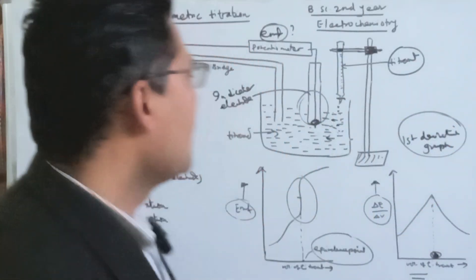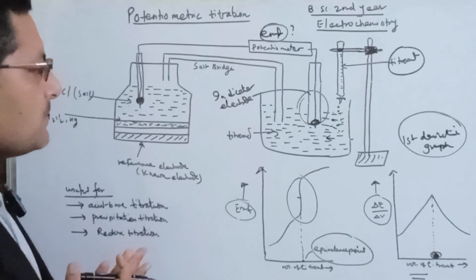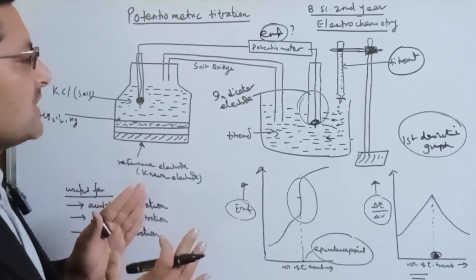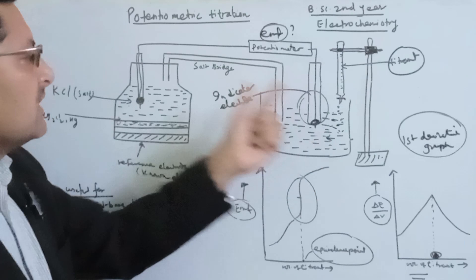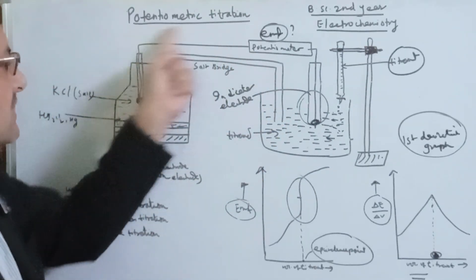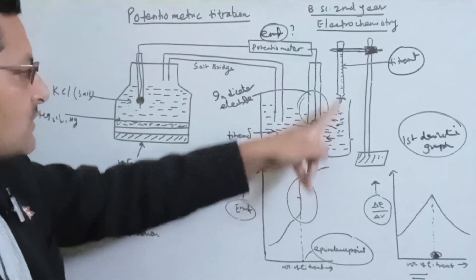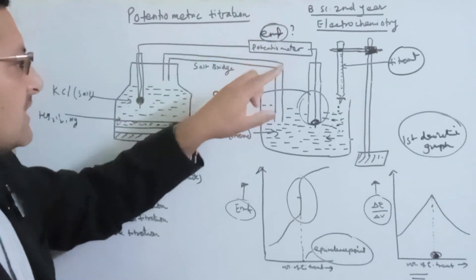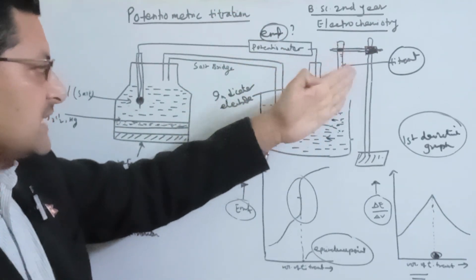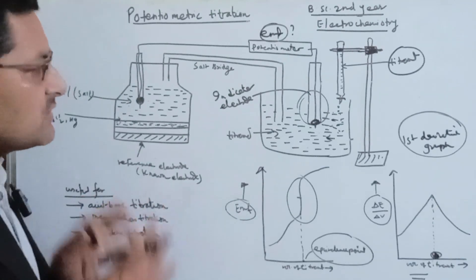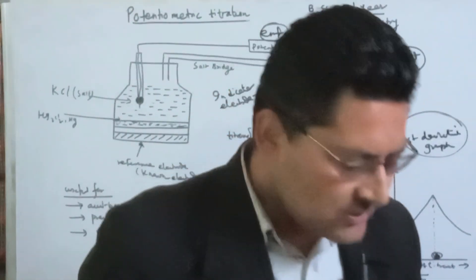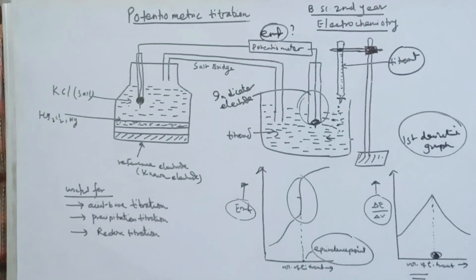Let's go through the potentiometric titration setup. In this case, we are going to start a titration. We need an indicator electrode, a reference electrode, and a salt bridge connection. We then record the volume of titrant versus EMF and plot a graph. We want to get the equivalence point. In this way, we can carry out a potentiometric titration.